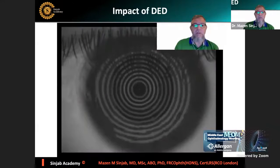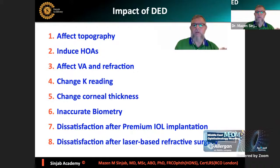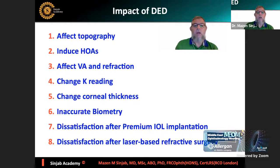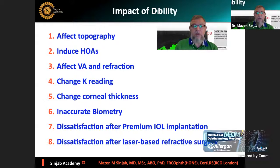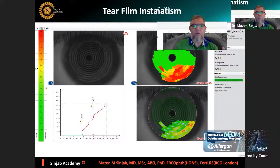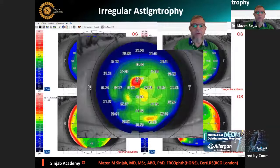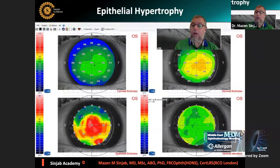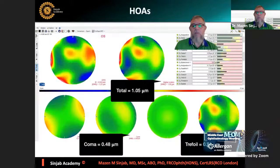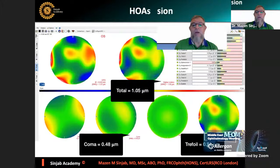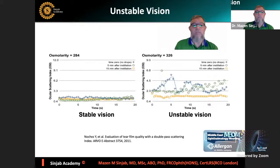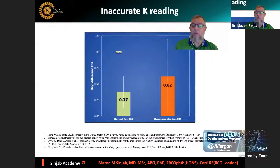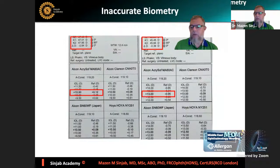The impact of dry eye disease: it affects topography, induces high-order aberrations, affects visual acuity and refraction, changes keratometry readings, and changes corneal thickness. All of this leads to inaccurate biometry before cataract surgery, and causes dissatisfaction after premium IOL implantation and after laser-based refractive surgery. Tear film instability leads to irregularities on the corneal surface, hypertrophy or thinning of the epithelium, and high-order aberrations.